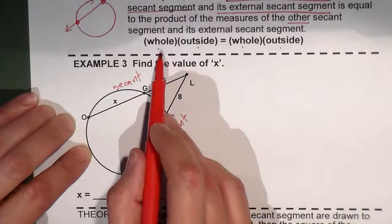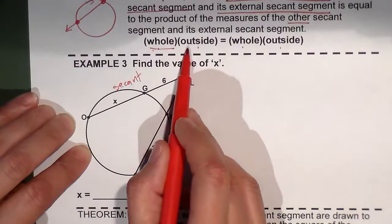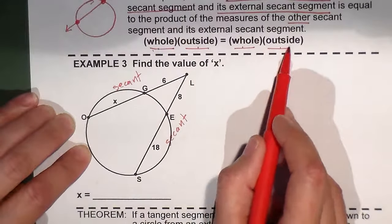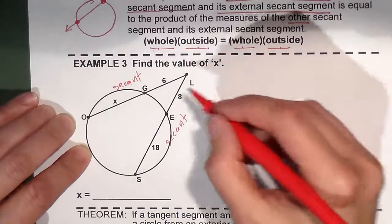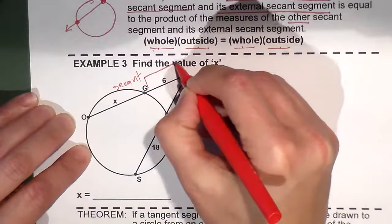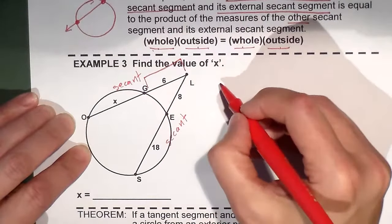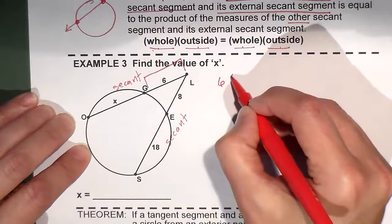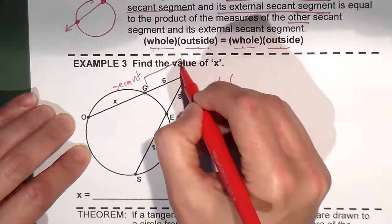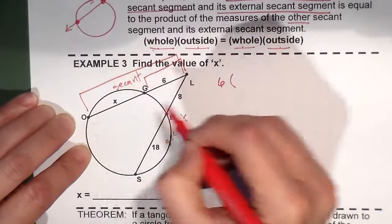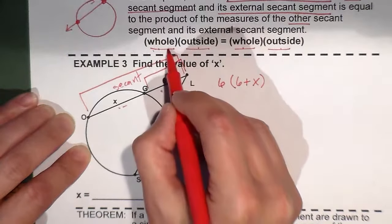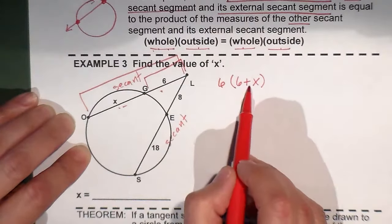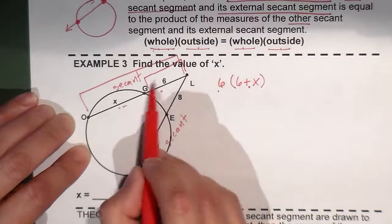Now what this is saying is that the entire secant times the outside piece equals the entire secant times the outside piece when you have two secants. Here's the outside piece for this secant. That's six. What's the whole piece for this secant? Six plus x. Wouldn't you add the two pieces together to get the whole secant? So you've got whole secant times exterior.